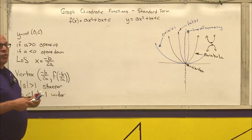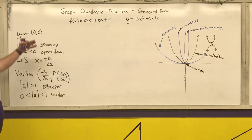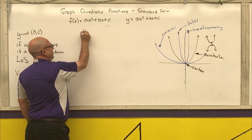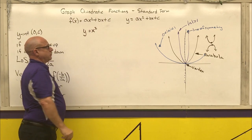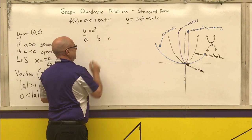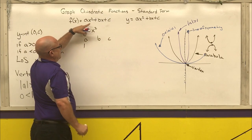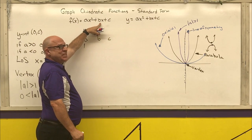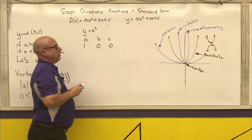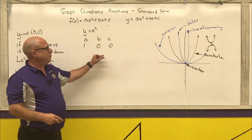Now we're going to graph the parent function and note some key facts. The parent quadratic function is y = x². Let's identify a, b, and c. A is the number in front of x², so it's 1. B is the number in front of x — there's no x term, so b is 0. And c is the last term, also 0.